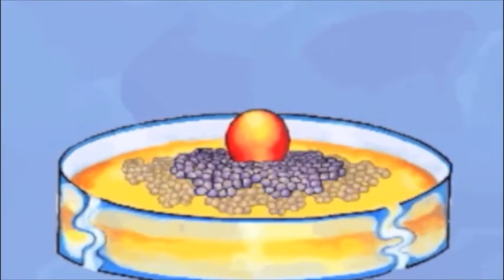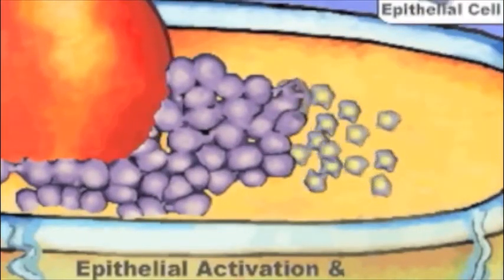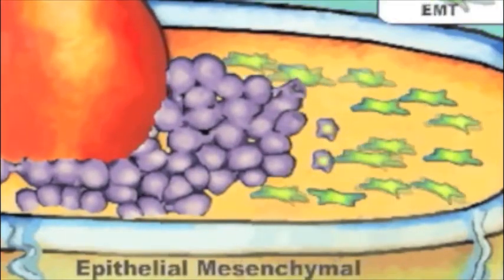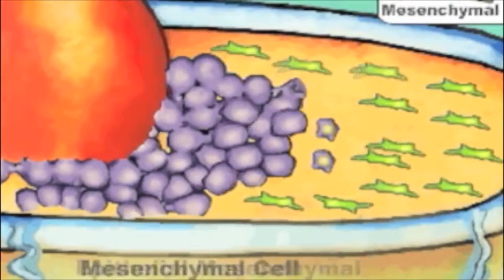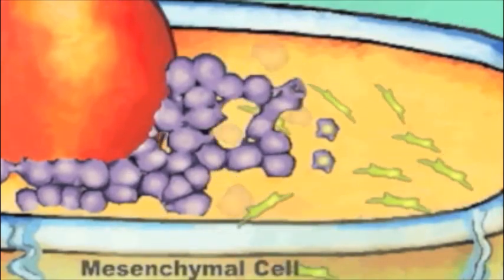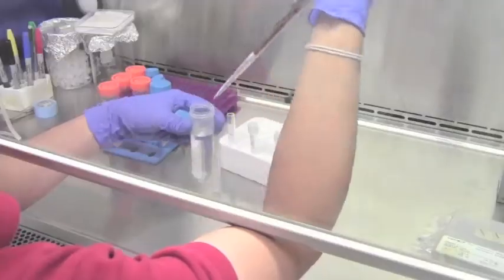After dissecting an embryo, the explant is placed on the gel. The endothelial cells spread out onto the surface of the gel and the heart becomes a beating myocardial ball. The cells, under the influence of a signal from the muscle, separate and invade the gel.